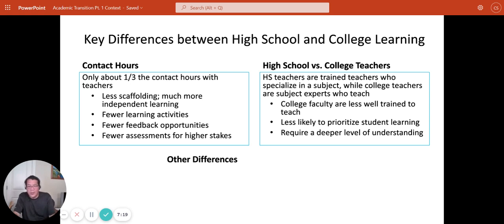So they're less likely to prioritize student learning. And because they are scholars of their field, their expectations about what constitutes adequate student learning for a course is probably deeper than it is for high school teachers. So you have college teachers who are less well trained to teach. They may be less motivated to teach, but they require a deeper level of understanding among their students.